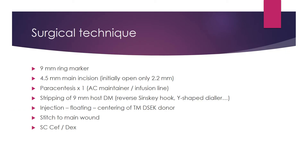For the surgical technique in the patient's eye, I usually do a marking with a 9 mm ring, then a paracentesis through which I use the Simcoe cannula controlled with the foot pedal of the phaco machine for the infusion line. My main incision is 4.5 mm — initially opened to 2.2 mm for Descemet's stripping and then enlarged to 4.5 mm prior to injector insertion. I strip 9 mm of host Descemet's membrane with a Y-shaped dialer, then inject, float, and center the graft, suture the main wound with a cross-stitch 10-0 nylon, and inject subconjunctival cefuroxime and dexamethasone.